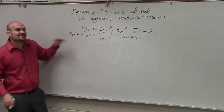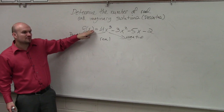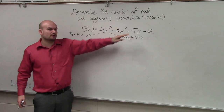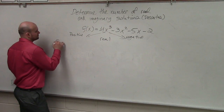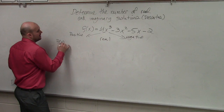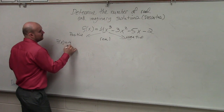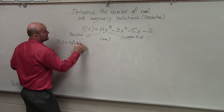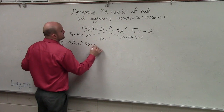To find the number of positive solutions, all we're simply going to do is rewrite our equation as is: f(x) equals negative 4x cubed minus 3x squared minus 5x minus 2.